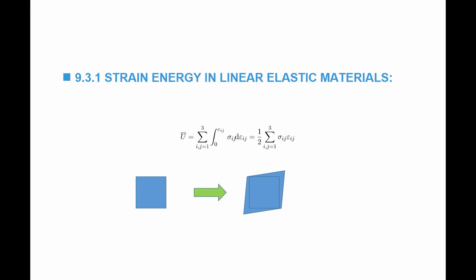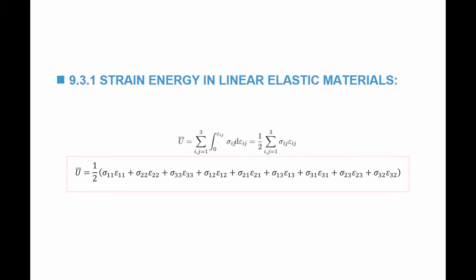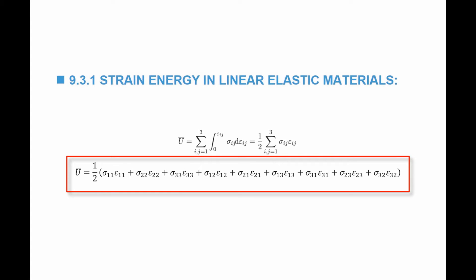Extending this to all the other components of stress and strain, the strain energy stored in a linear elastic material per unit volume is equal to half of each component of the stress multiplied by the corresponding component of the strain. This means the strain energy per unit volume equals half times: σ₁₁ε₁₁, σ₂₂ε₂₂, σ₃₃ε₃₃, σ₁₂ε₁₂ plus σ₂₁ε₂₁, σ₁₃ε₁₃ plus σ₃₁ε₃₁, and so on.